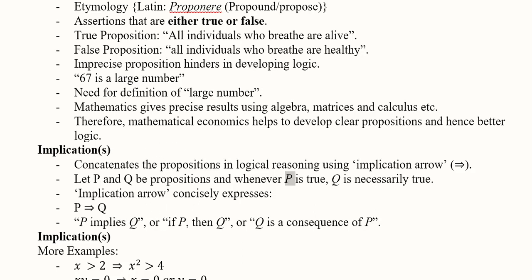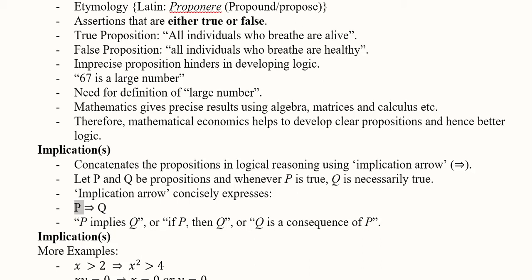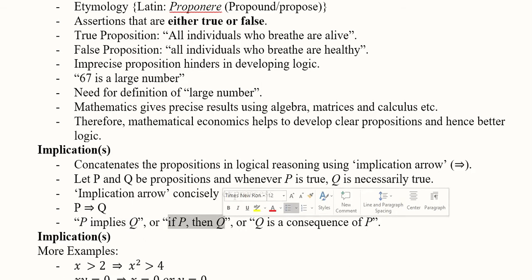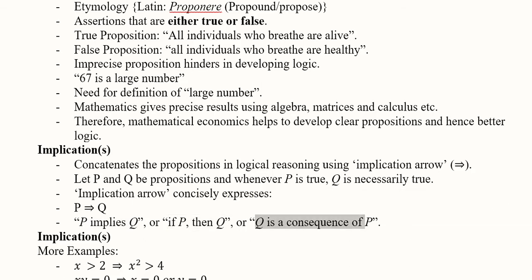If p is true, then q will always be true. When two propositions are connected and have a certain relationship or consequence, we have an implication. There is an implication of p for q, written using the arrow. We read this as: p implies q, or if p then q, or q is a consequence of p. These are three ways to read an implication containing two propositions p and q.